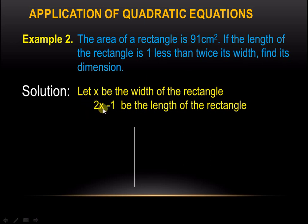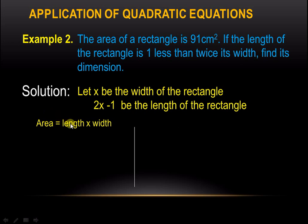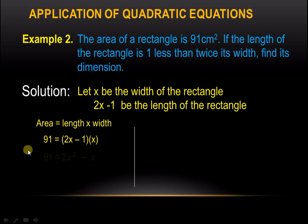Take note of how it is written: 2x minus 1, because it says 1 less, meaning we subtract 1 from twice its width. Now, the area of a rectangle is simply length times width, so we multiply these two. We have the equation: 91, which is the area, equals (2x minus 1) times x, which is the width. Distributing x, we get 91 equals 2x squared minus x.